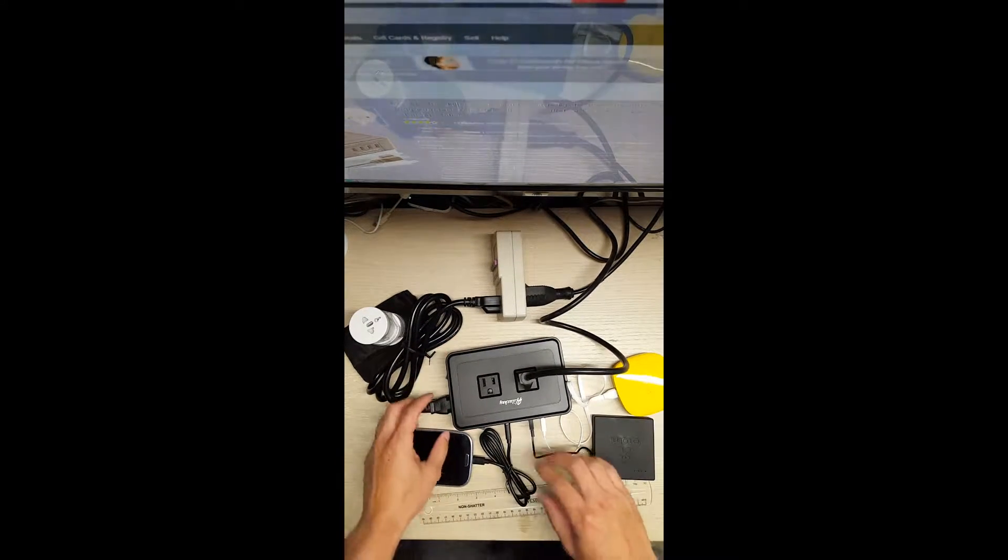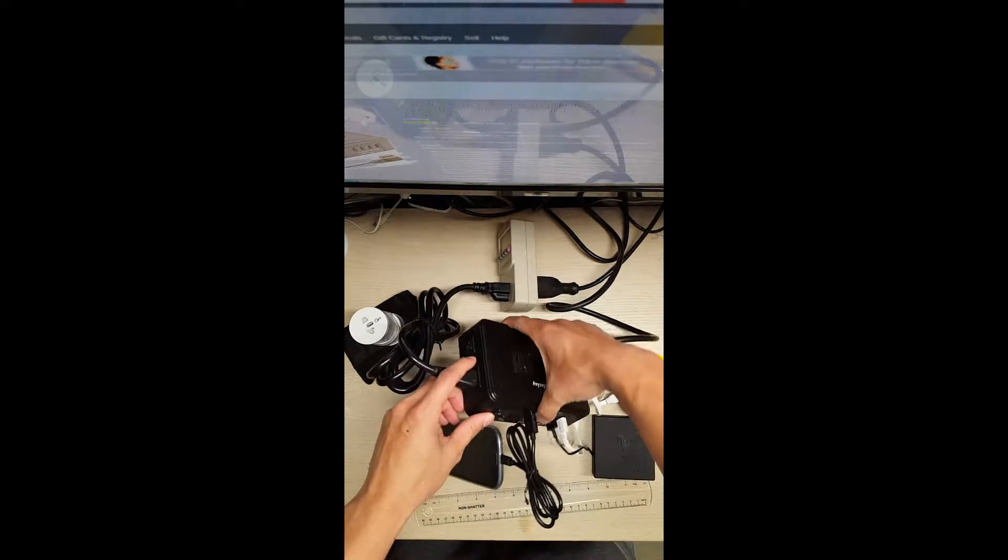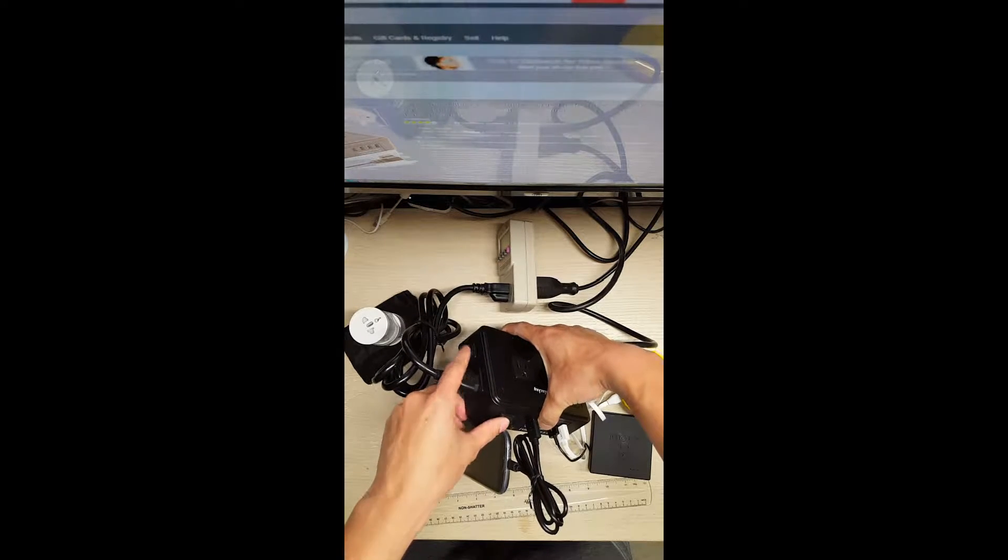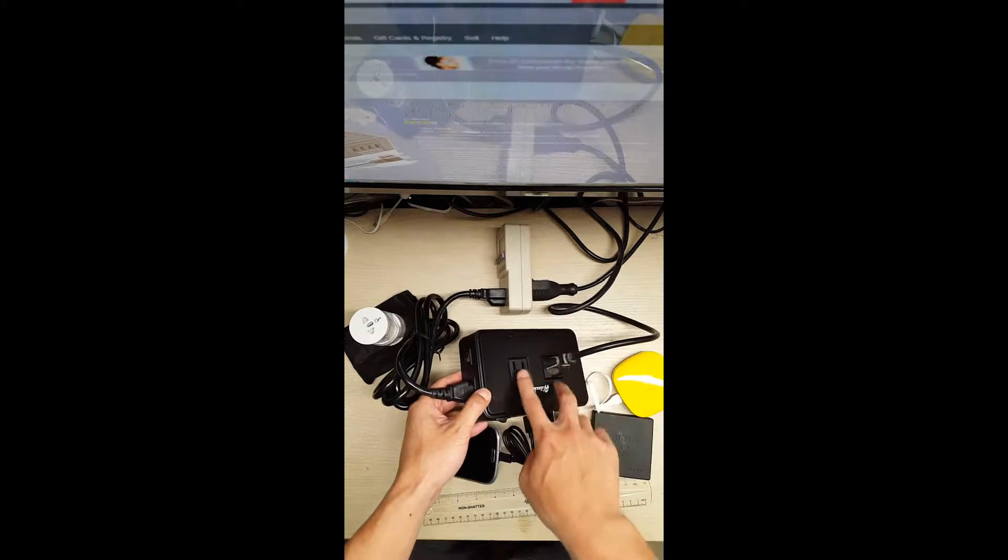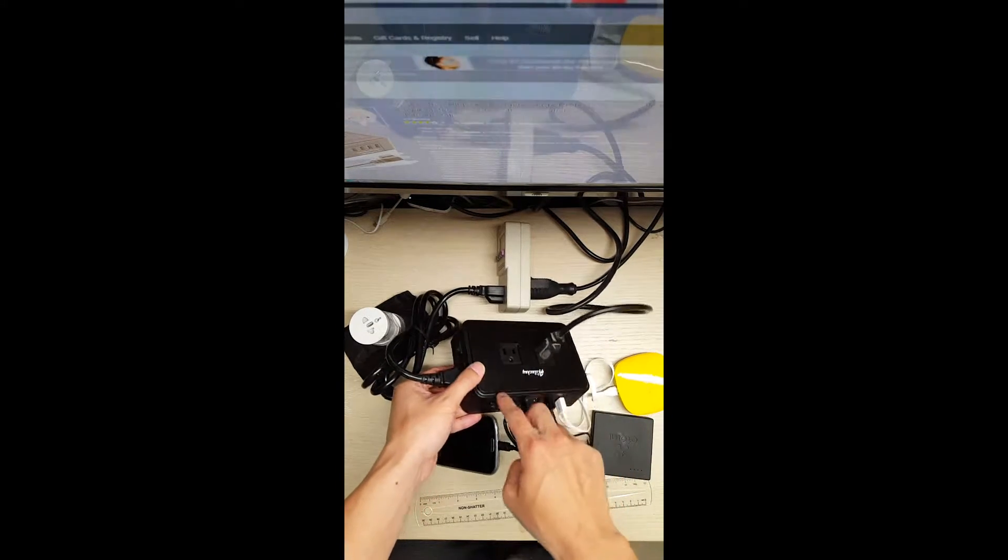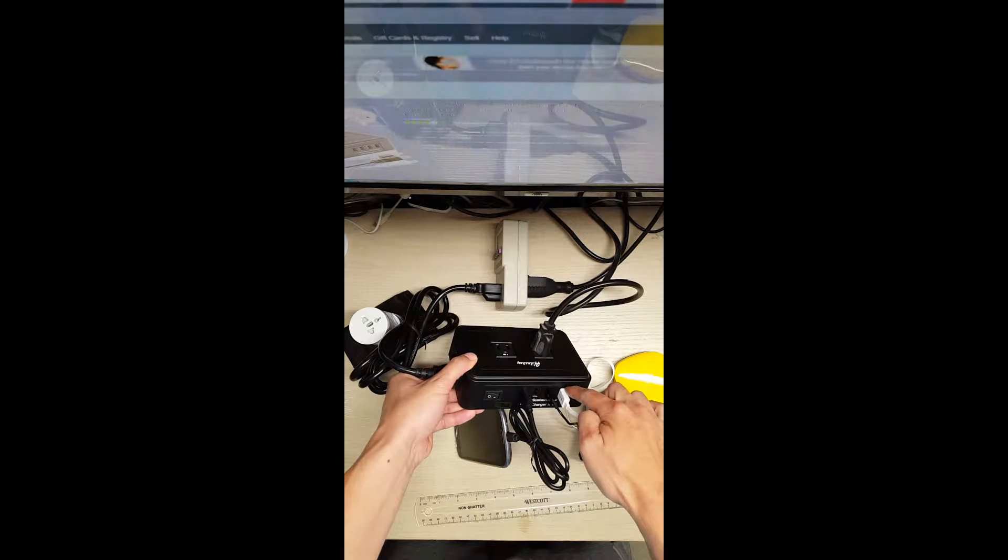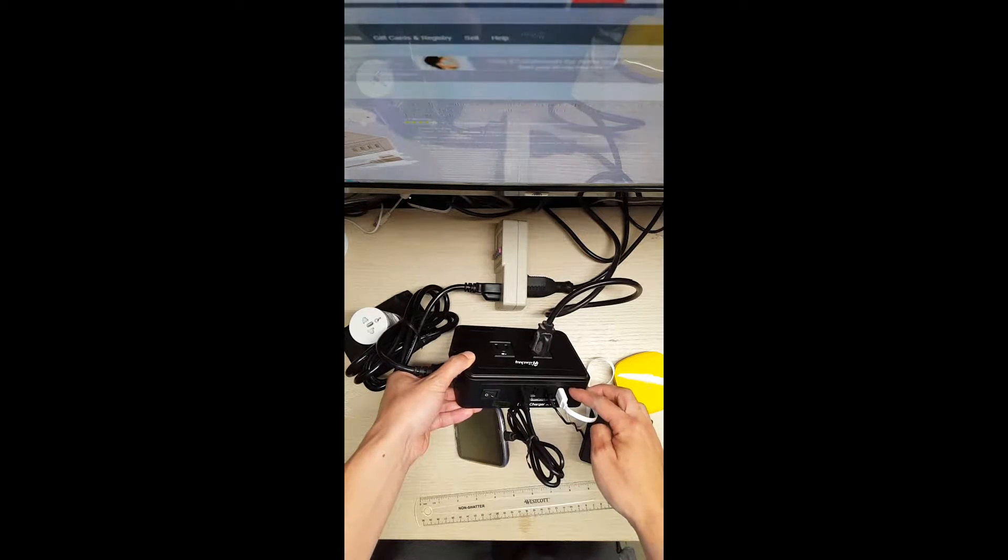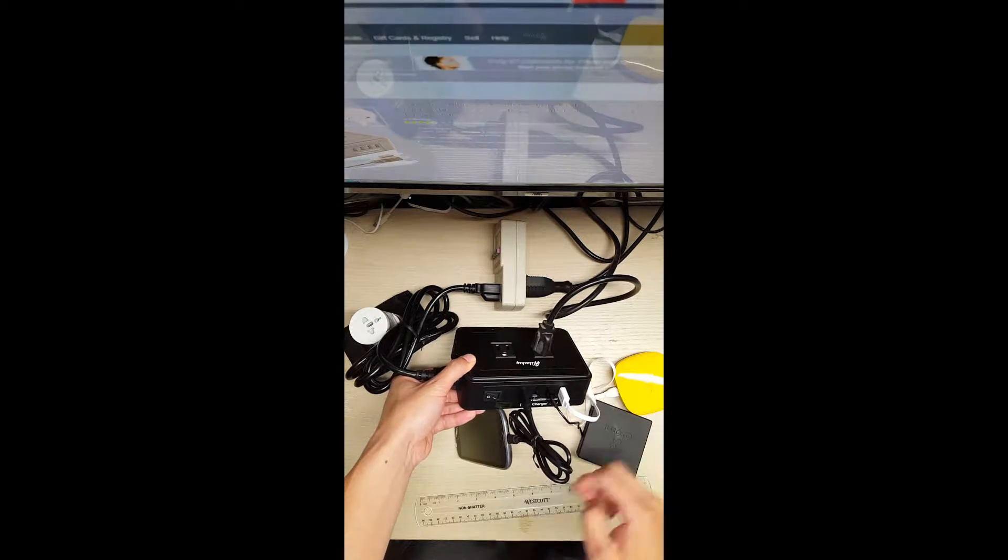It has two switches for on and off. This one is for the 2 power surge protector outlets and this one is for all four USB ports. The USB plugs are 1 amp to 2.1 amp each.